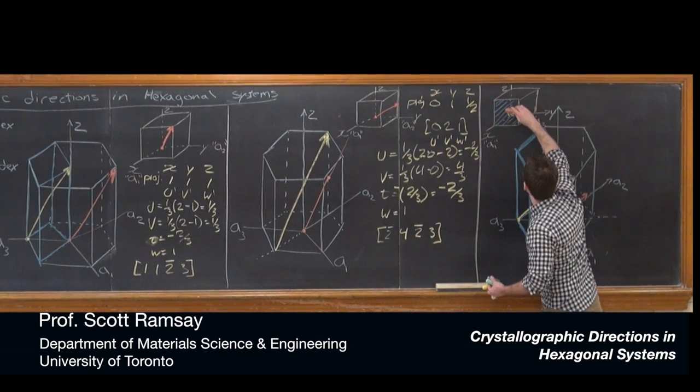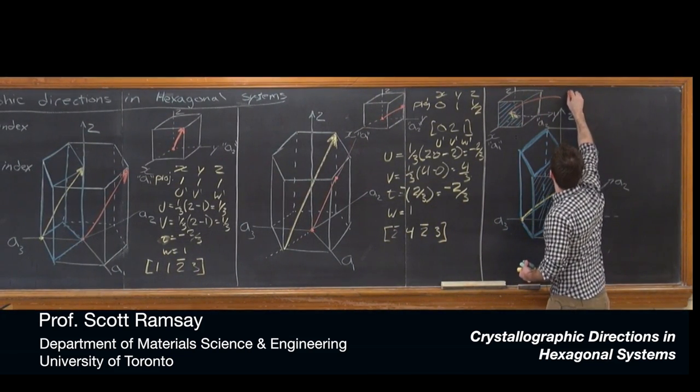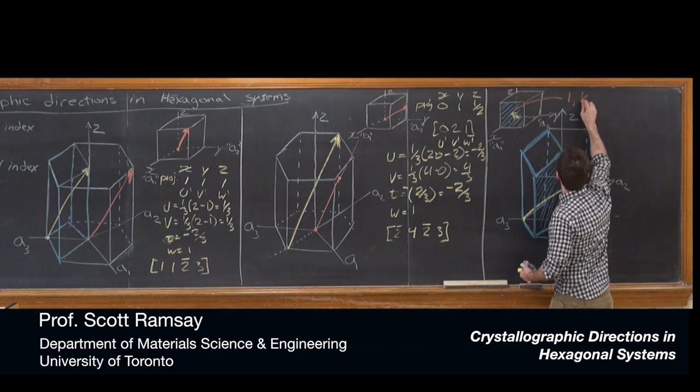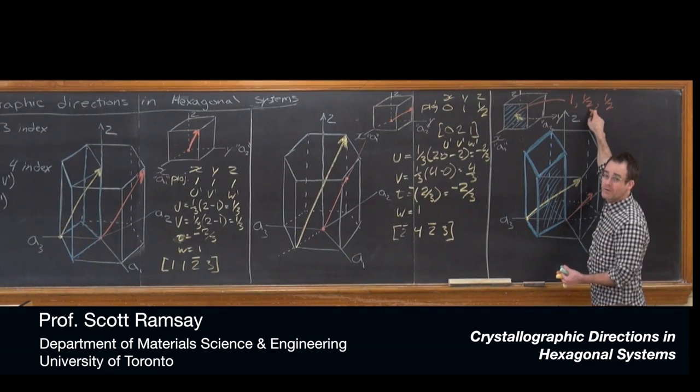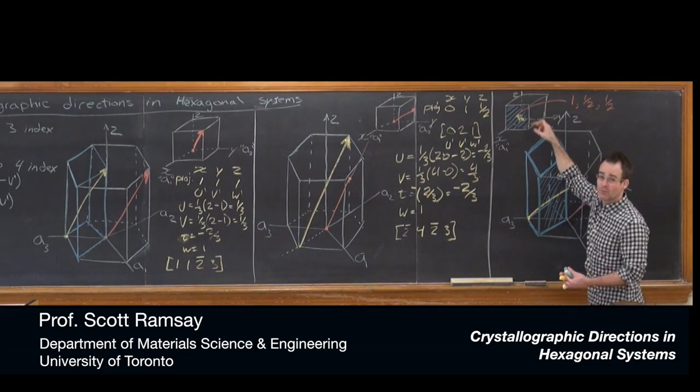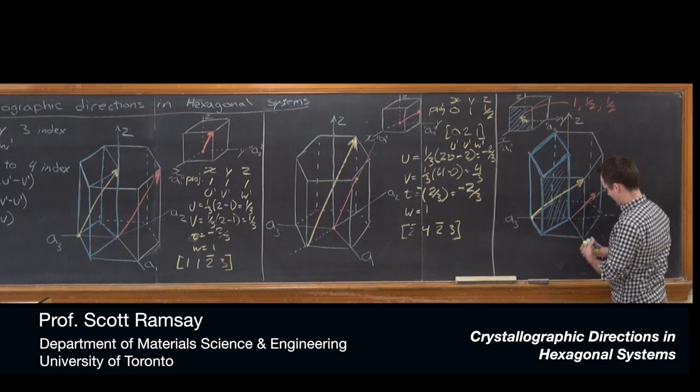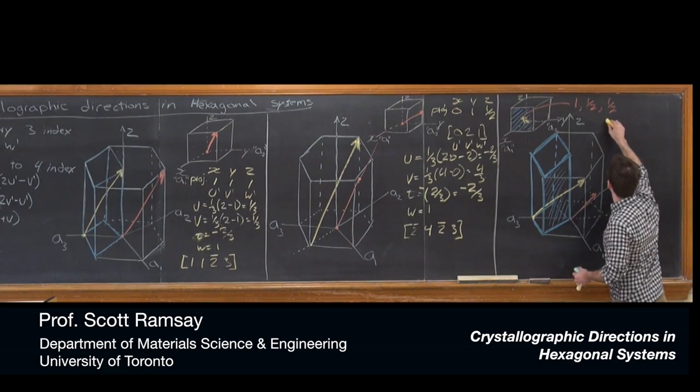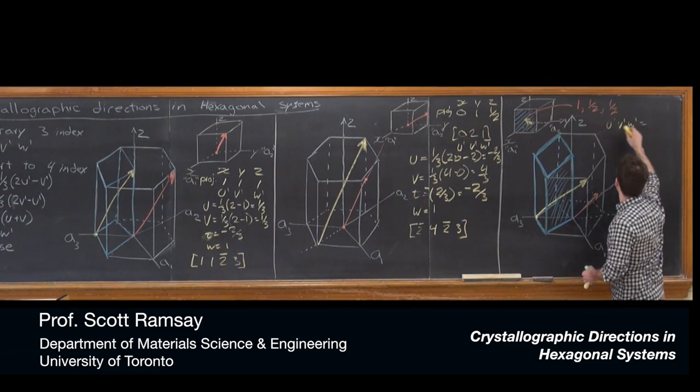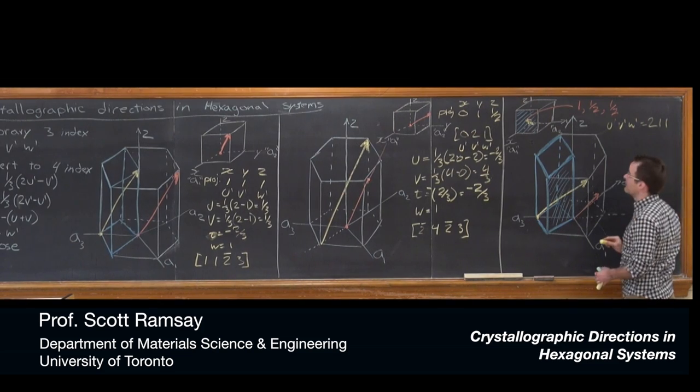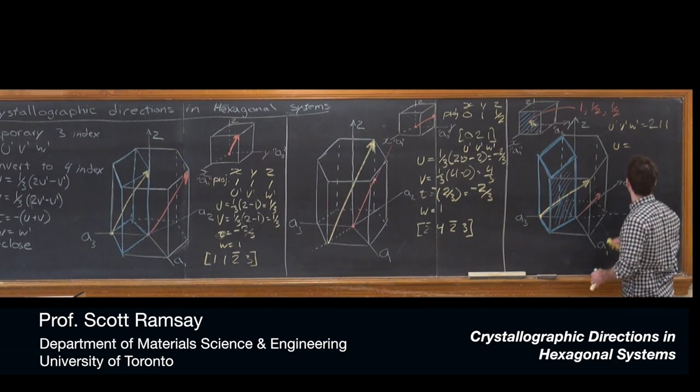This is our conventional origin back here where our vector has originated. This blue face is the face the vector is exiting from, which means the vector goes from the conventional origin and pops out halfway, straight through the center of this front face. The point coordinates where the vector exits the unit cell are 1 in the X direction, 1/2 in Y, and 1/2 in Z. If those are the point coordinates of the head of the vector originating at the origin, those are our projections onto X, Y, and Z.